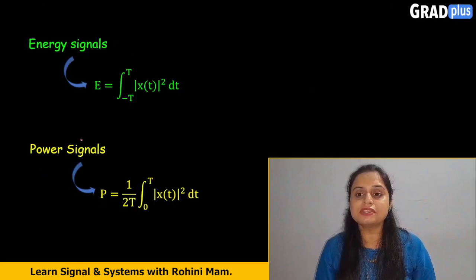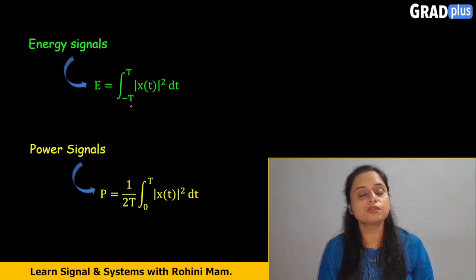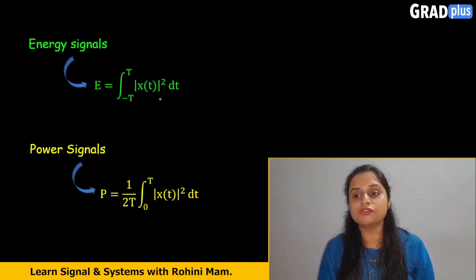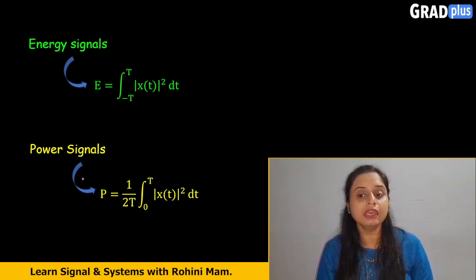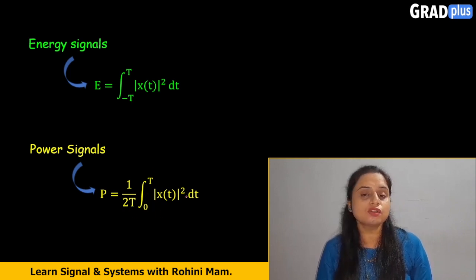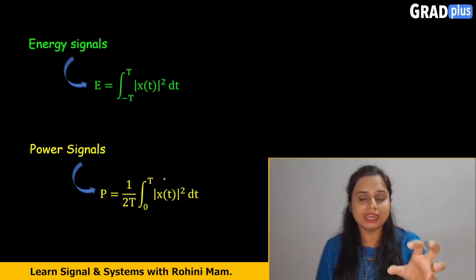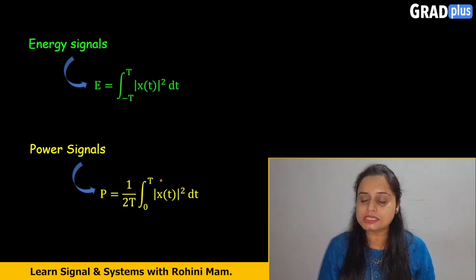The next difference is the formula. The formula for the energy signal is given as E equals integration from −T to T of |x(t)|² dt. The formula for the power signal is given as P equals (1/2T) integration from 0 to T of x(t)² dt. These are the formulas for finding out the energy and the power of any signal.